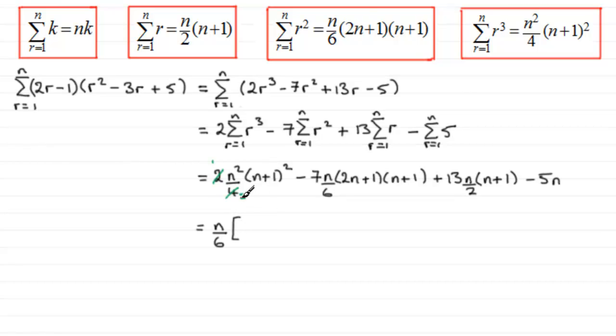So for the first term, I'm going to need a 3 because of that 2 there, and then I've already pulled out an n, so it's going to be 3n bracket and then n plus 1 all squared. For the second term, I've already got the 6 out, I've already got the n out, so it's just going to be minus 7 bracket 2n plus 1 multiplied by the n plus 1.